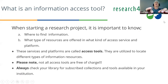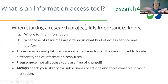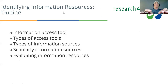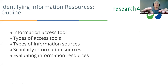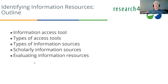Now we'll talk about identifying information resources. The outline covers: information access tools, types of access tools, types of information sources, scholarly information sources, and evaluating information resources. Remember, you will have access to all these presentations, which include links to cited documents. Starting a research project requires knowing where to find information and what types of resources and access services — called access tools — are offered. Not all access tools are free of charge, so you may encounter databases requiring a subscription. Always start with your library's collections, then go to Research for Life.